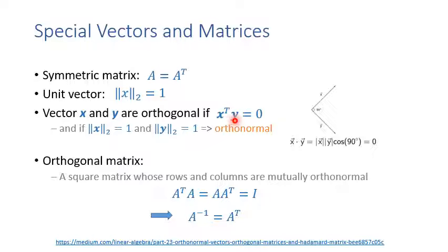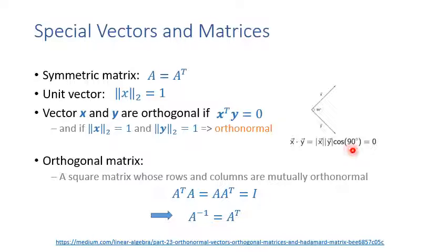The term x^T·y = 0 implies x and y are orthogonal. This follows from the geometric definition: the inner product equals |x|·|y|·cos(θ). If the inner product is zero, cos(θ) = 0, meaning θ = 90°, so x and y are perpendicular.